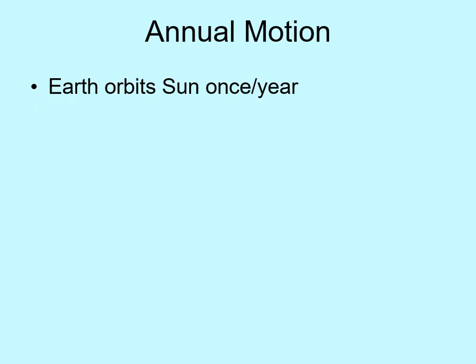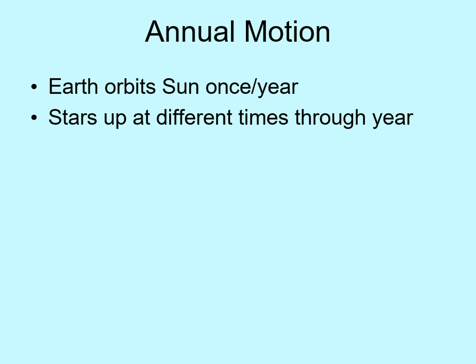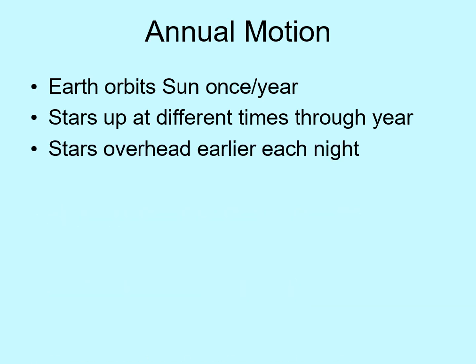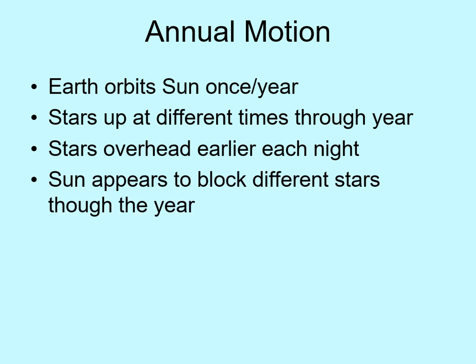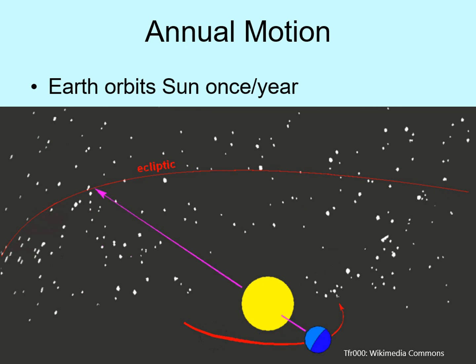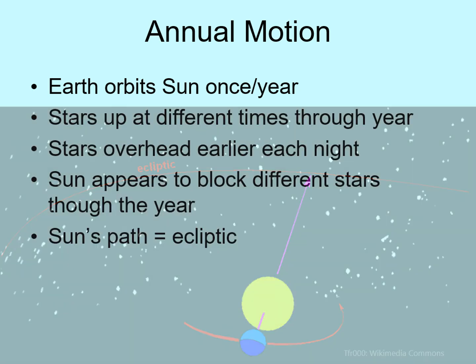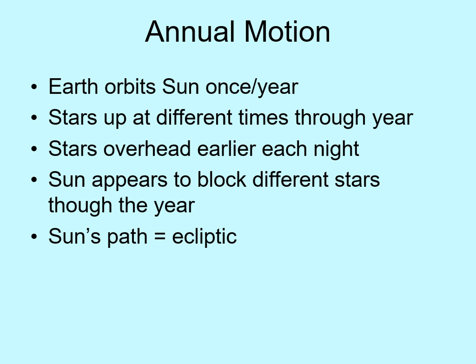Now let's add on the fact that the Earth is also orbiting around the Sun each year. This is going to mainly affect when a given star is up in the sky. If a star is overhead at midnight this month, then as the Earth orbits around the Sun, the time that star is overhead will change. Since the spin and orbit are in the same direction, the star will be overhead earlier each night. In the course of a night, we rotate around to see most of the sky. However, there will always be a piece of the sky that is blocked out by the Sun. As we orbit the Sun, the piece that is blocked out will slowly shift. In this animation, you see how the Earth's motion causes the Sun to block different stars. The path the Sun makes through the sky each year is called the ecliptic.